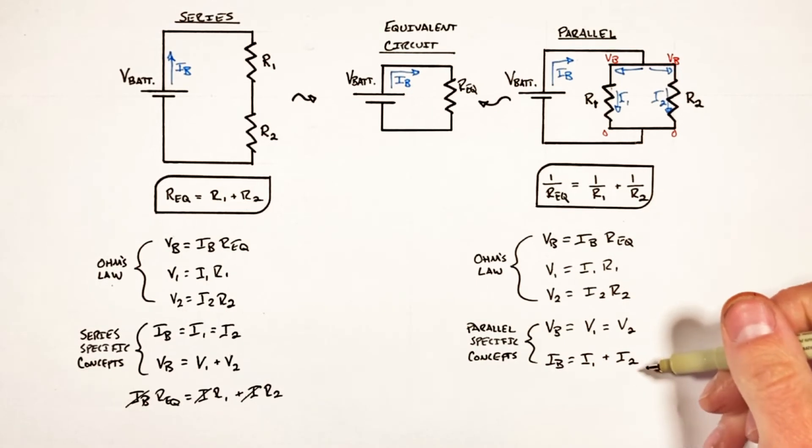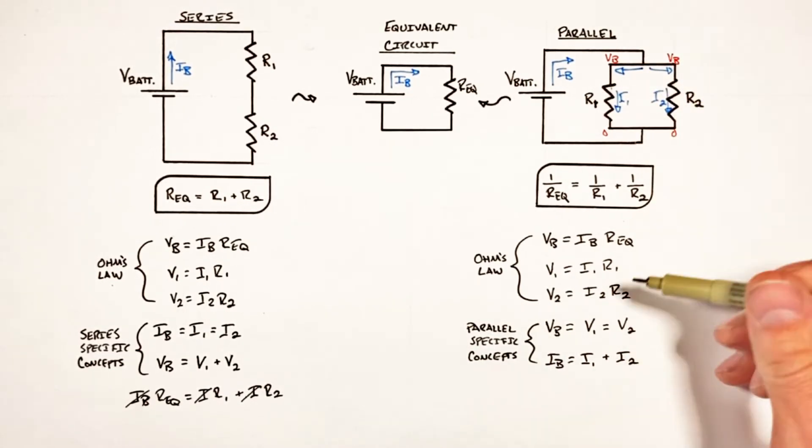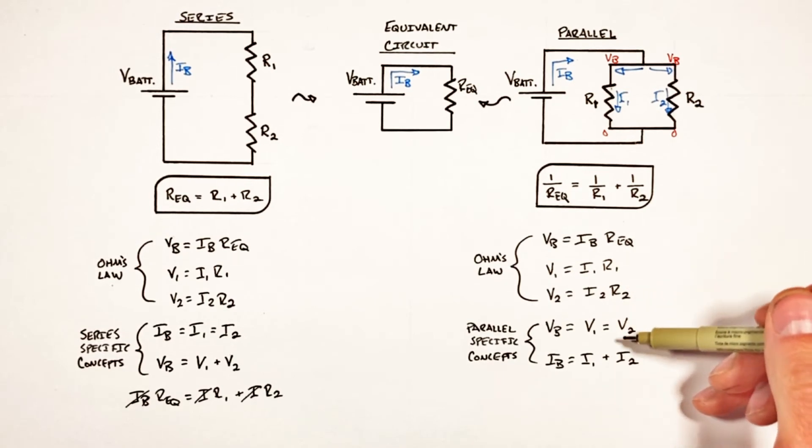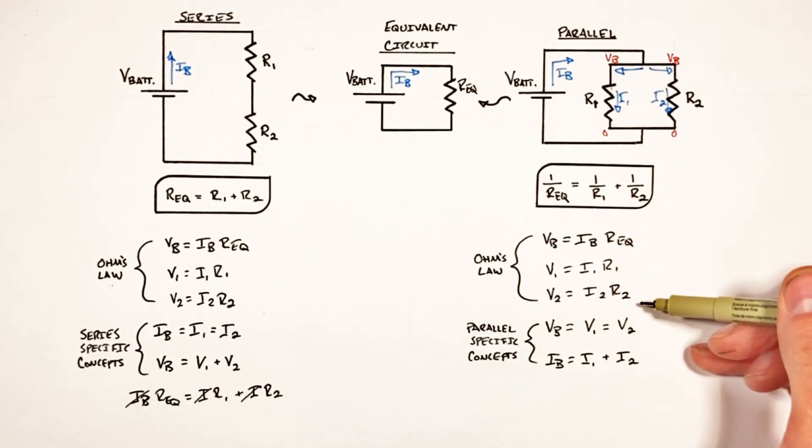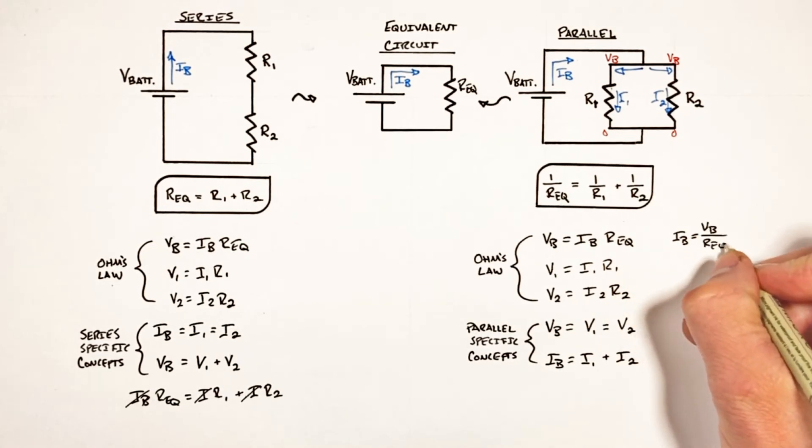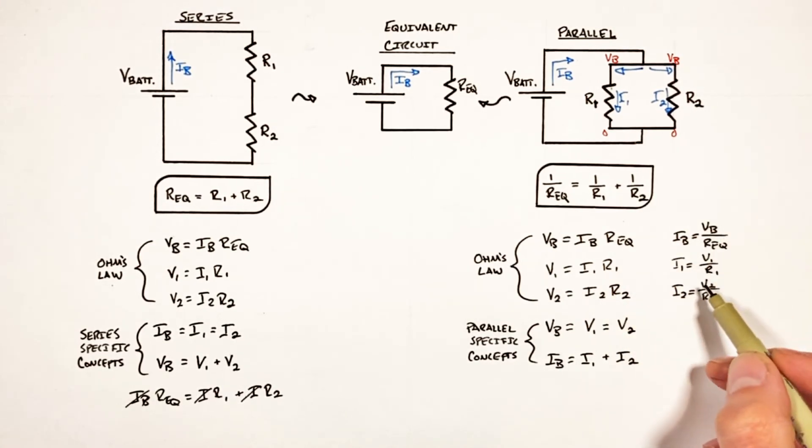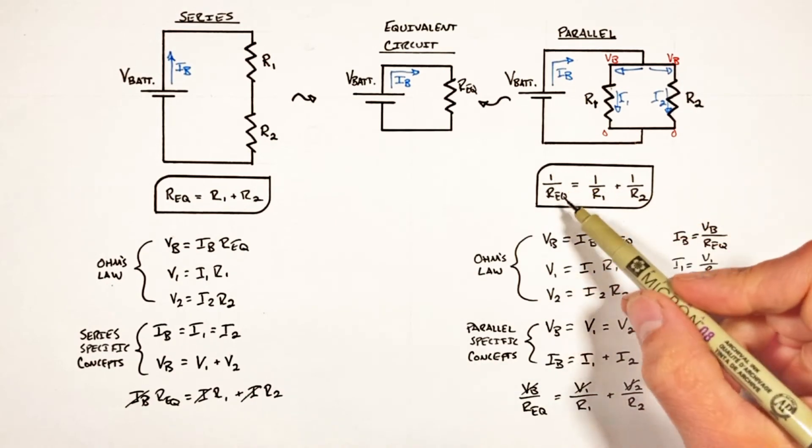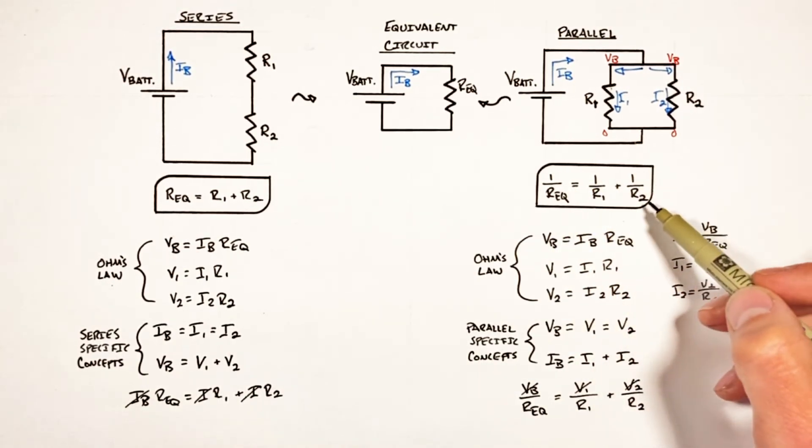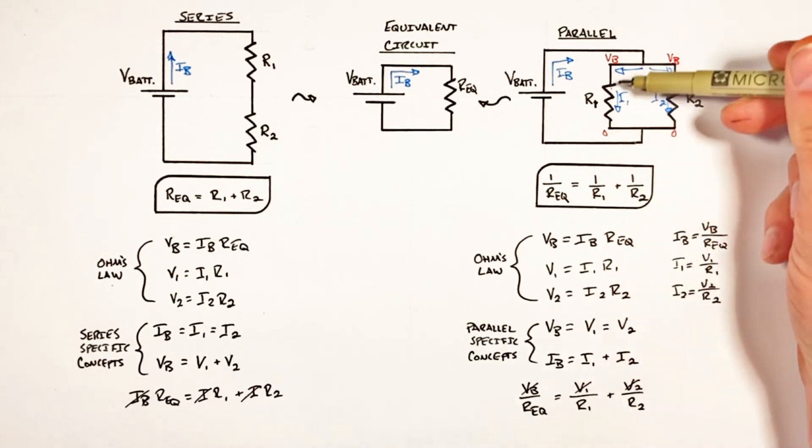So now with some equations written down that are specific to resistors in parallel, we can again substitute these equations in, not into our voltage equation but our equation for current. To do that, we're going to rearrange these functions up here for current and then sub them in right here. And since all of our voltages are the same, these are ultimately going to cancel out and we're left with 1 over Req equals 1 over R1 plus 1 over R2—our equation for resistors in parallel.